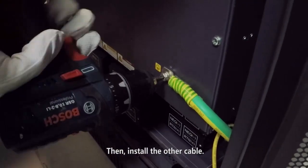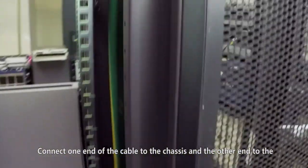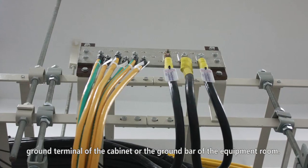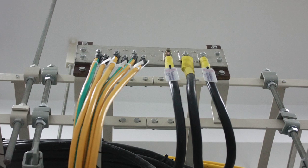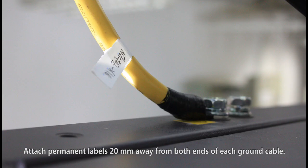Then, install the other cable. Connect one end of the cable to the chassis and the other end to the ground terminal of the cabinet or the ground bar of the equipment room. Attach permanent labels 20mm away from both ends of each ground cable.